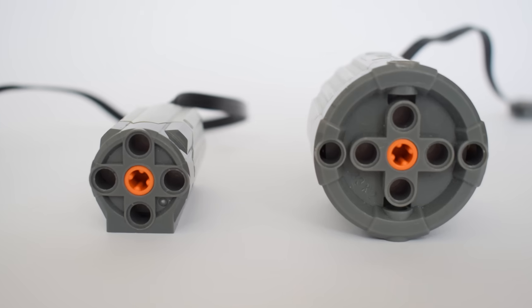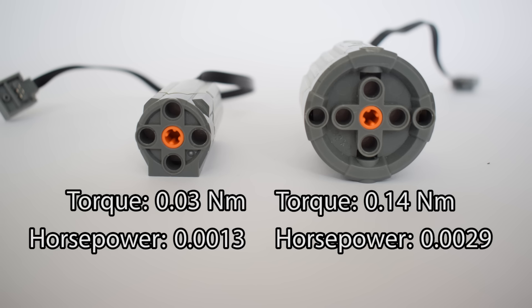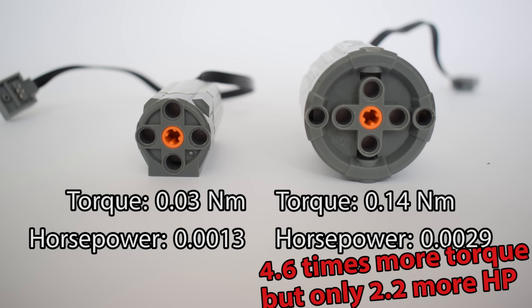Now let's move on to horsepower. We already know the torque output of our two motors. Now let's add the horsepower output as well. And here we have the horsepower output of our two Lego motors. Do you notice something peculiar here? The large motor has more than four times the torque of the small motor but it has barely twice the horsepower. How is this possible?